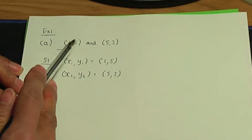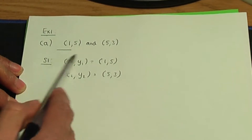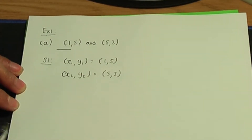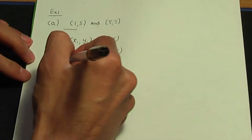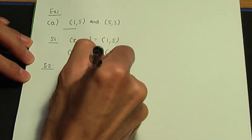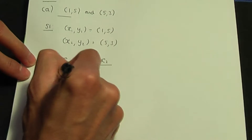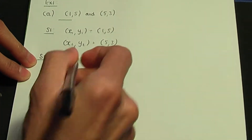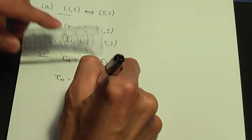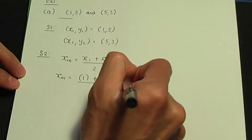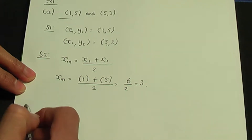It doesn't really matter which one you take as x1, y1 and which one you take as x2, y2. I name the first one x1, y1 and the remaining one x2, y2. In step two, let's apply the formula. In order to work out xm, remember it's x1 plus x2 divided by 2. When we substitute our data in, x1 is 1 plus x2 which is 5, divided by 2. 1 plus 5 is 6, divided by 2 gives us an answer of 3. So 3 is the x-coordinate of the midpoint.